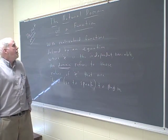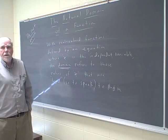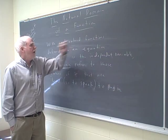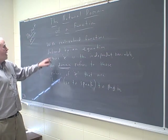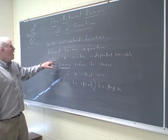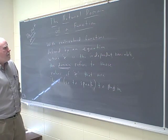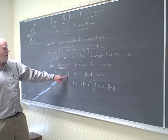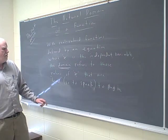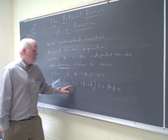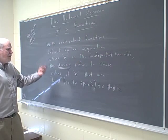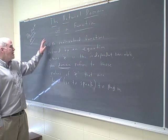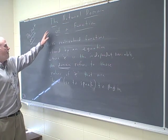Hi. Today we're going to talk about the natural domain of a function. With real-valued functions defined by an equation where x is the independent variable, the domain refers to those values of x that are illegal to plug in, so to speak. In other words, what's legal? Can you put that x in there? Can you put negative 3 in your function? Does it work okay? That's the question we're going to ask about the natural domain.